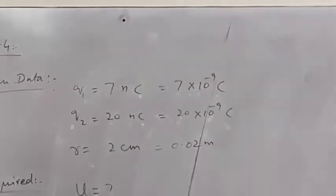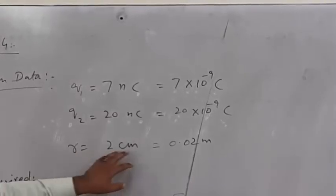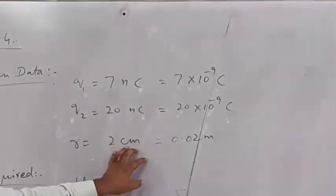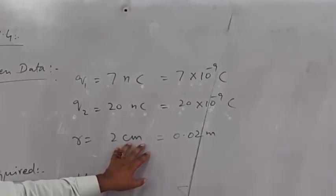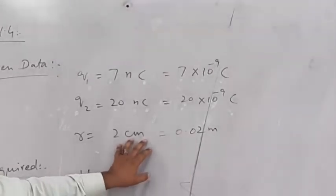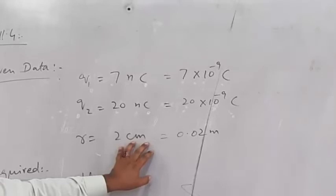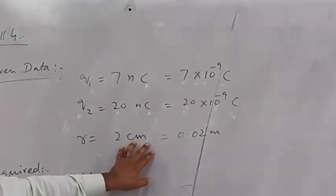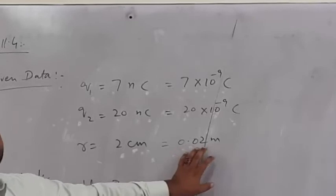Distance is 2 cm. Converting cm to meter, we get 2 × 10^-2, which is 0.02 meter.